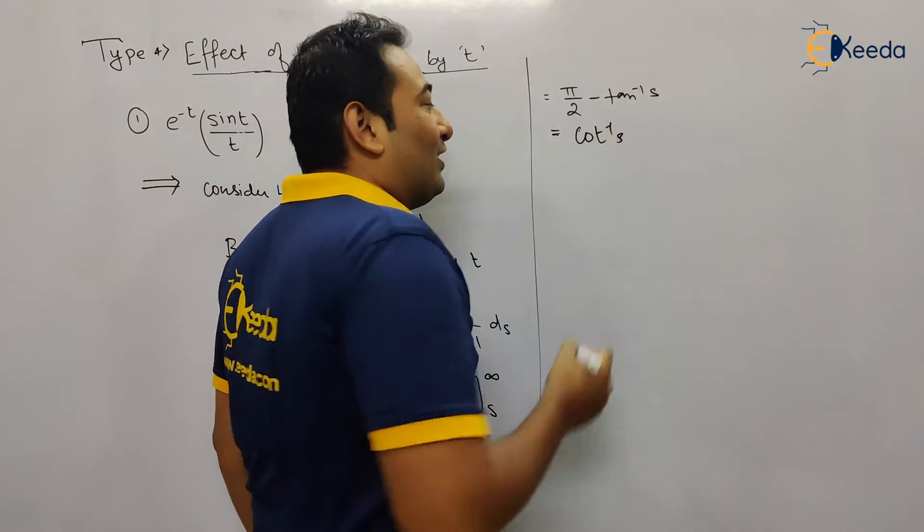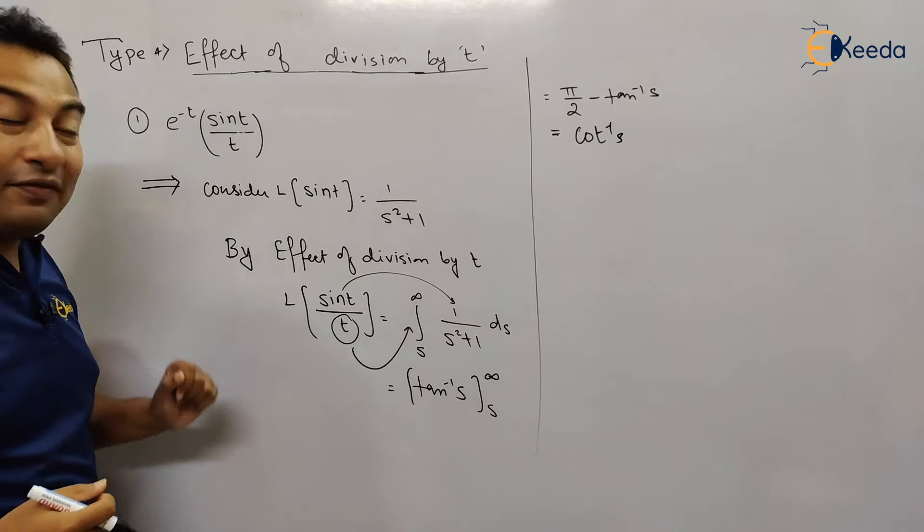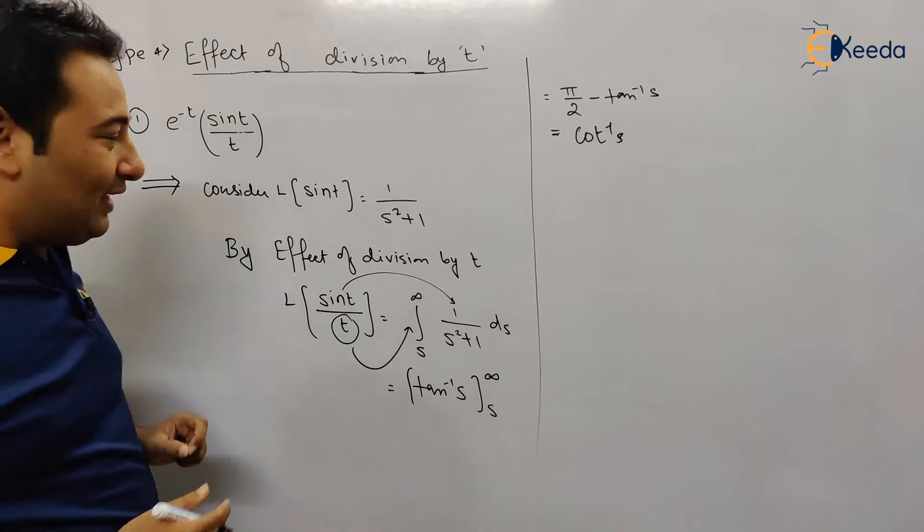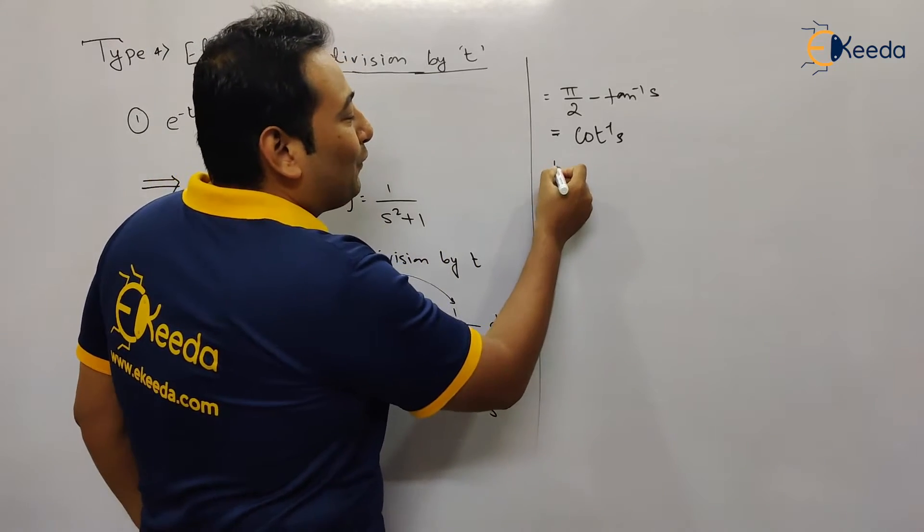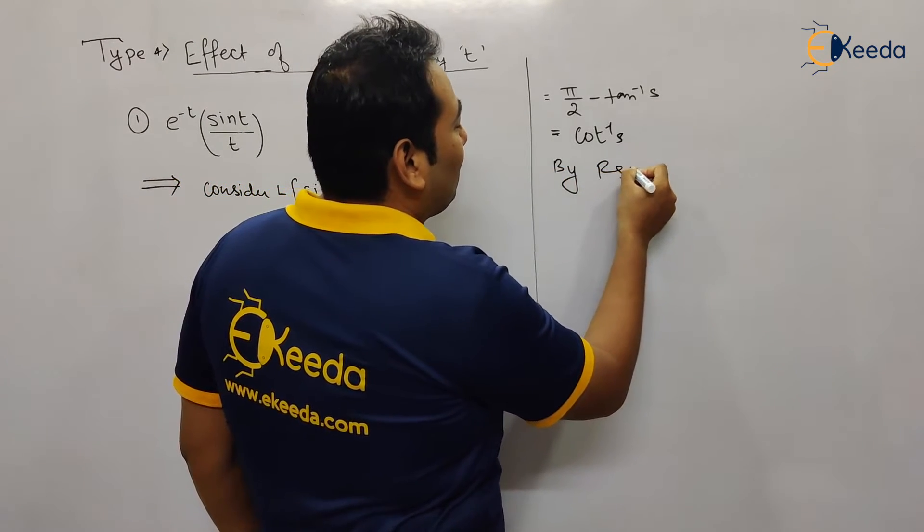Formula number 7, π by 2 minus tan inverse s is what? Cot inverse s. That's it. So this is effect of division by t. What left? Still one property left, and what is that? FSP. Always apply FSP at the end.